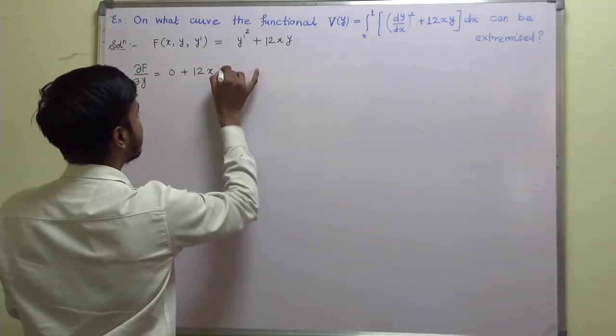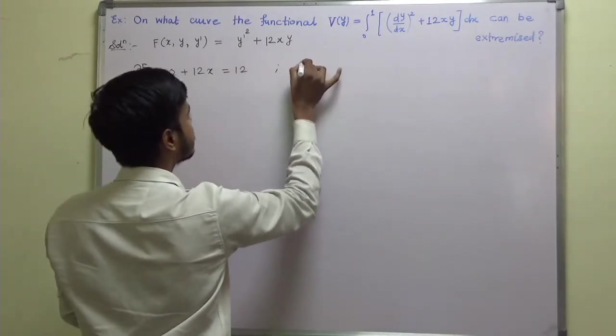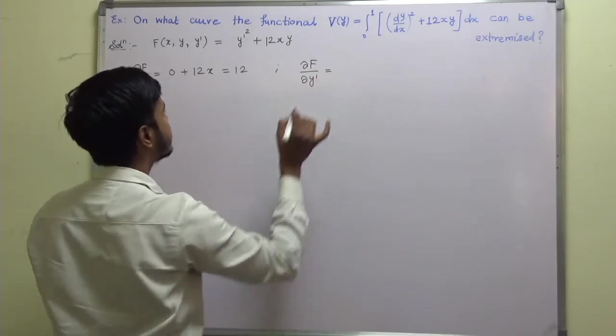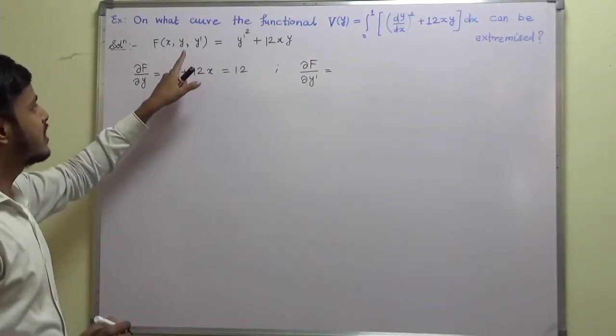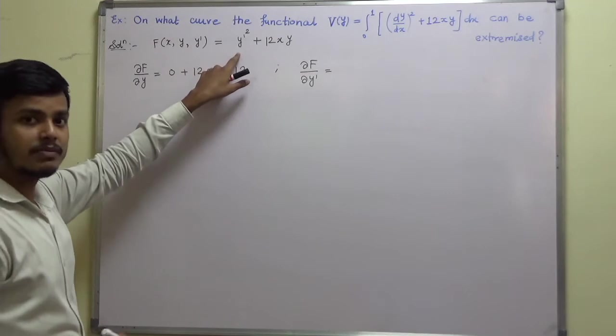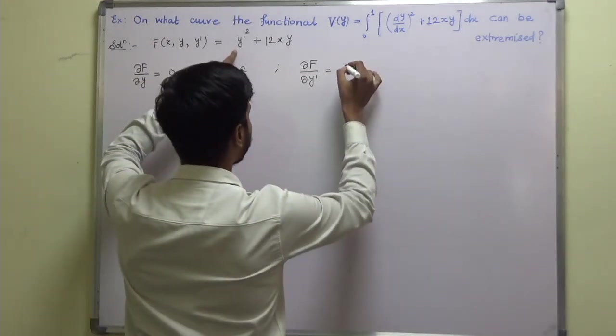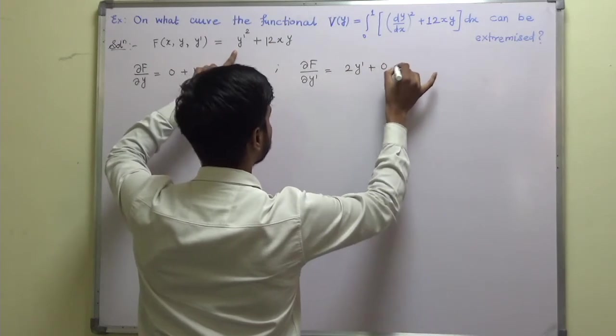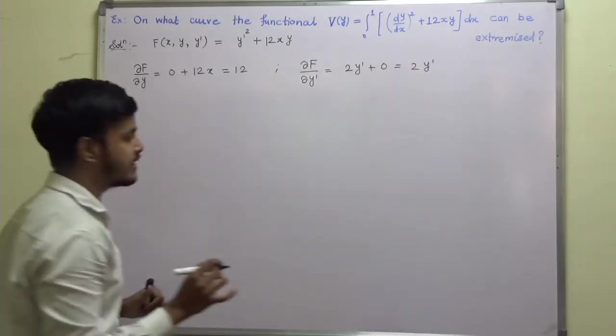And likewise, you can find out ∂f/∂y'. So what is ∂f/∂y'? When you differentiate this with respect to y dash, keeping x and y constant. So this is 2y' plus 0. That is equal to 2y'.